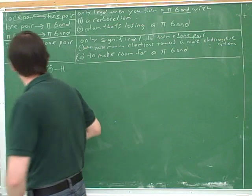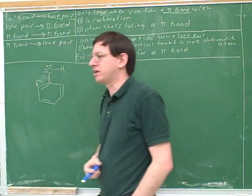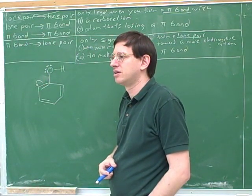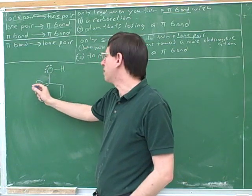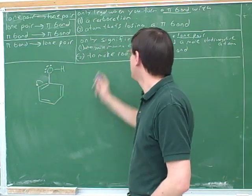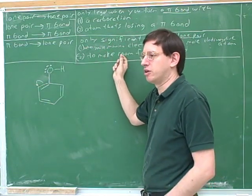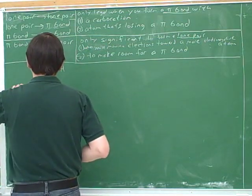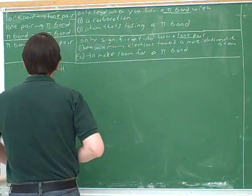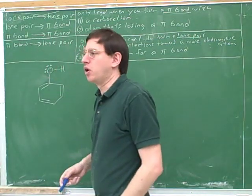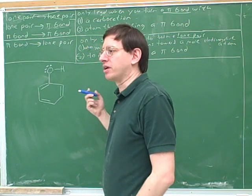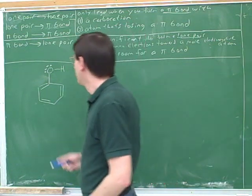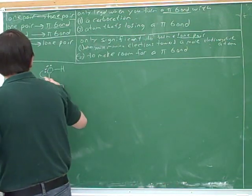How about this arrow on its own — would it be a good arrow? There's no reason to do this. We're forming a lone pair but we have neither of the required reasons for forming a lone pair, so by itself that wouldn't work. Can anyone think about an arrow that we can put in here?